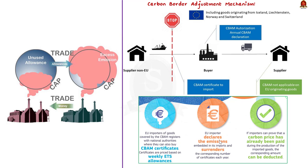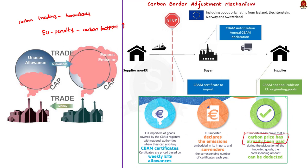Let us quickly go through the carbon border adjustment mechanism (CBAM). EU importers are mandated to purchase carbon certificates equal to the carbon price that would have been paid if goods had been produced under EU carbon pricing rules. If the carbon price was already paid in the country of origin, the corresponding cost for the EU importer can be fully deducted. By making products with higher carbon footprints costlier, the EU aims to eliminate carbon leakage and encourage non-EU producers to green their manufacturing. In simple terms, CBAM is a penalty tax to discourage imports of carbon-intensive goods like steel, aluminium, cement, fertilizers and electricity into the EU.